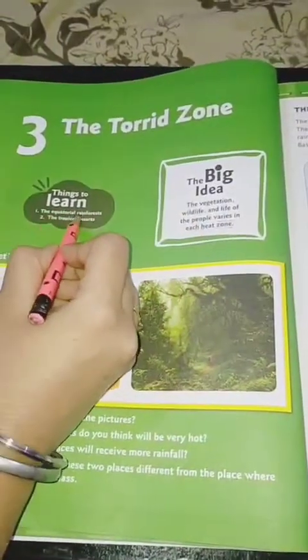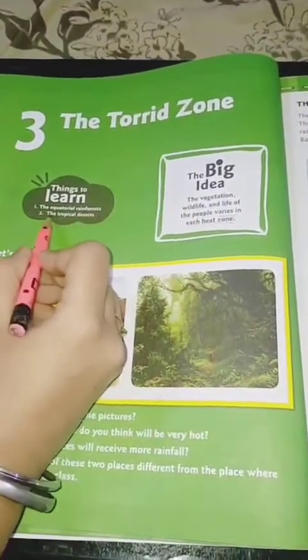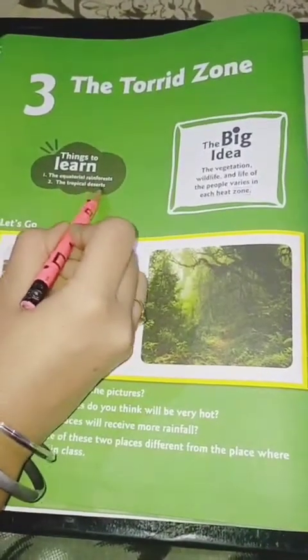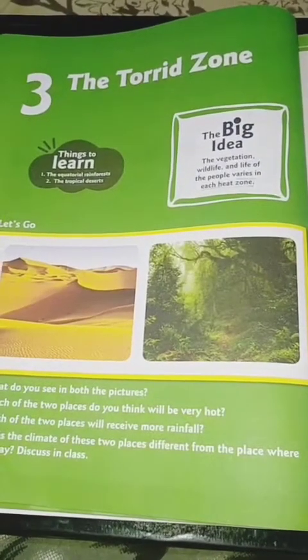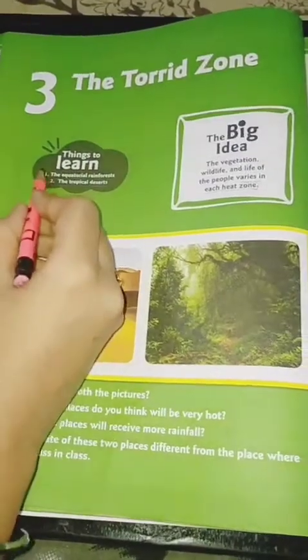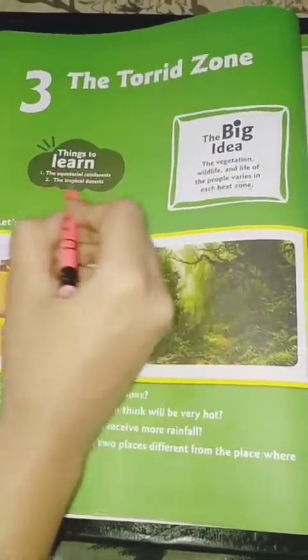This region has further two categories. The first one is the equatorial rainforest and the second one is the tropical desert. Here we will study about the vegetation, wildlife, and people living in these two heat zones.